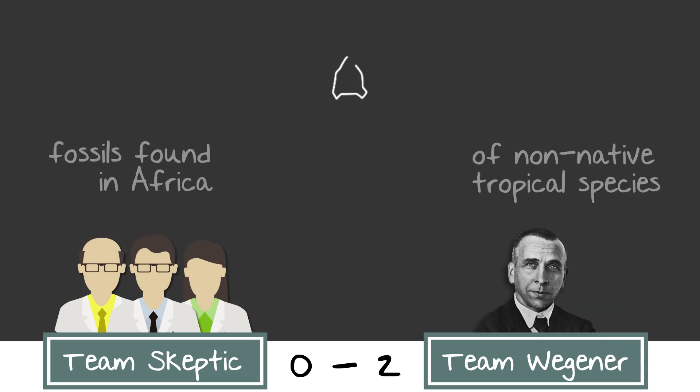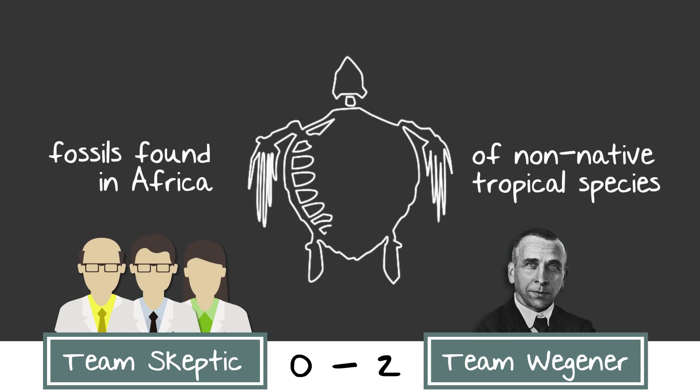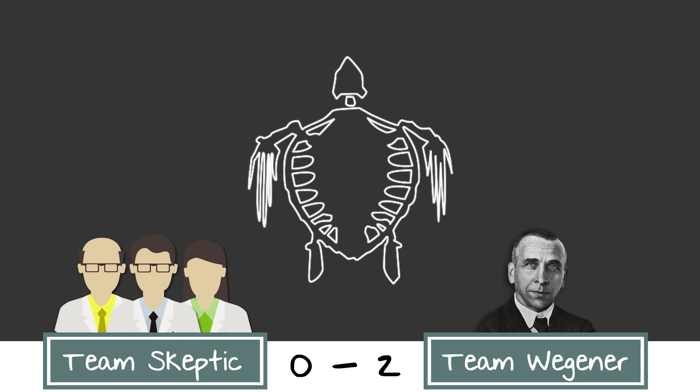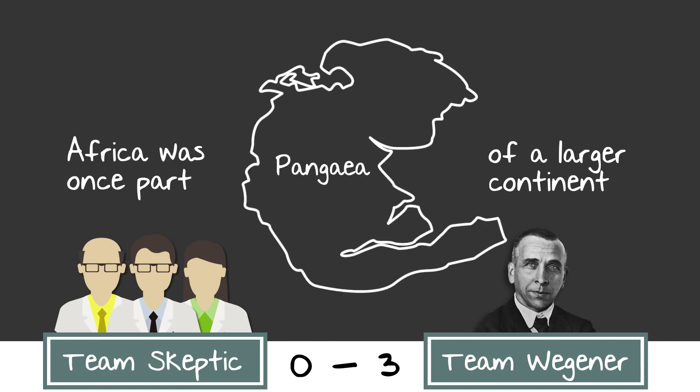And then there was the fossil evidence. Fossils of tropical animal and plant species have been found in Africa, and other places on Earth that are less than tropical. One plausible explanation was that Africa was once part of a larger continent that was home to these tropical plants and animals. Remember Pangea?